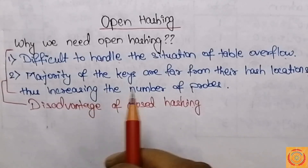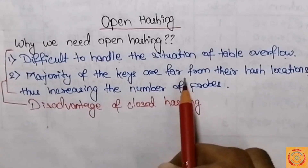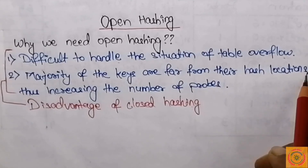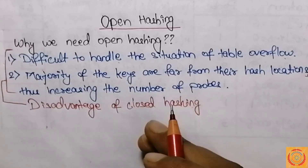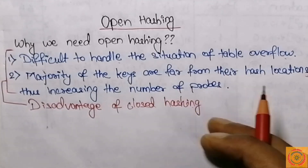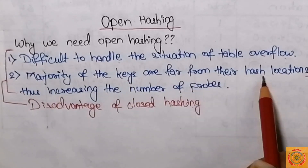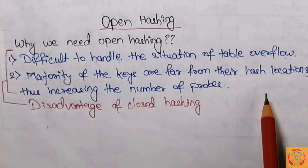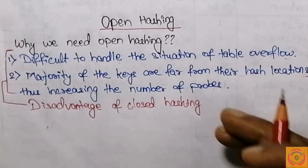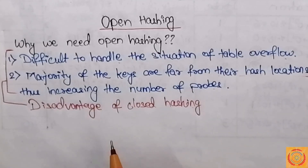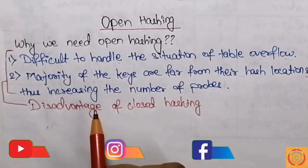The second disadvantage is that in the probing methods the values are hypothetically mixed — the majority of the keys are far from their hash locations. For example, in quadratic probing we were mapping at a difference of 1², 2², 3², and so on. In that case the majority of the keys were far from their original hash locations, which increased the number of probes and ultimately led to degradation of overall performance. To resolve these problems we use the open hashing method.